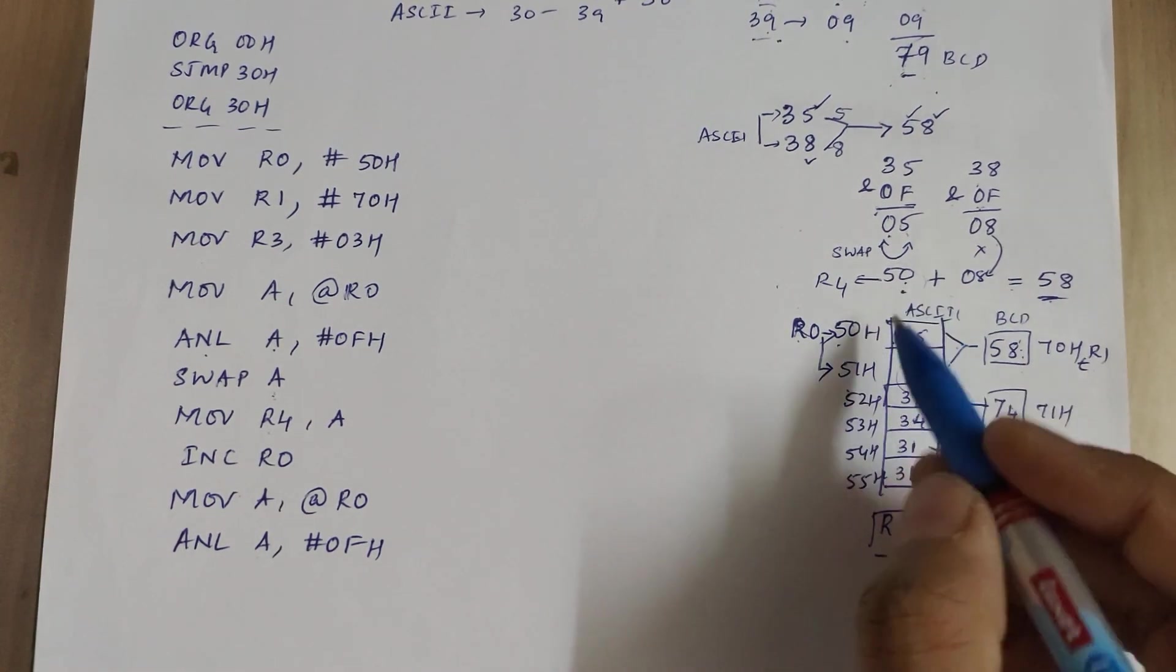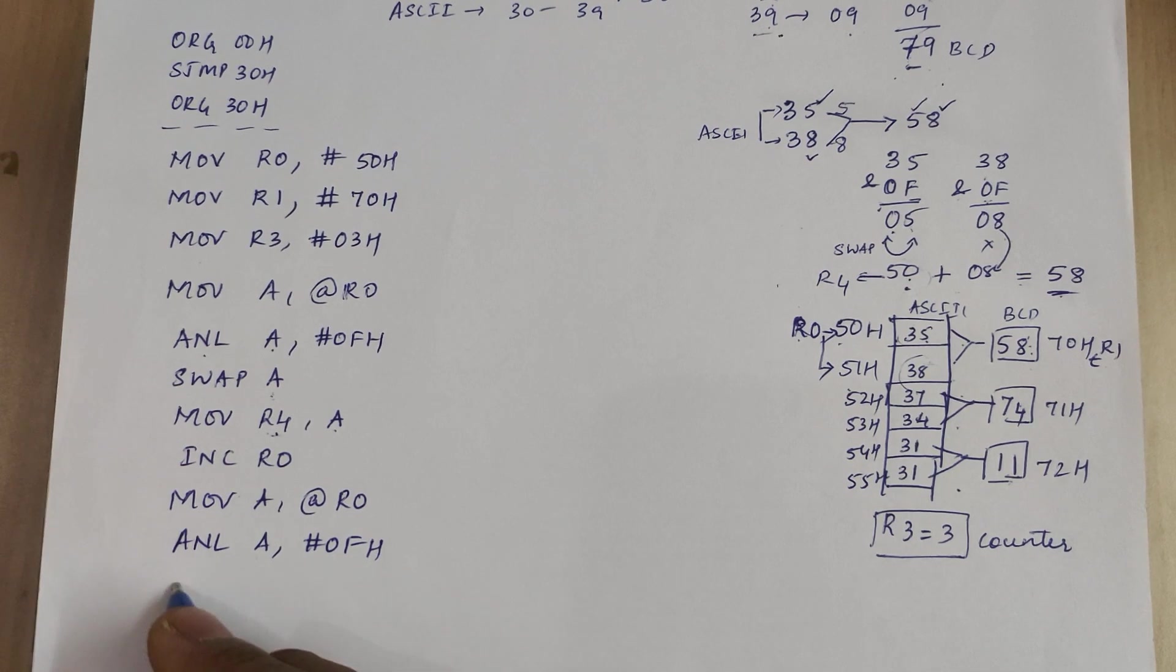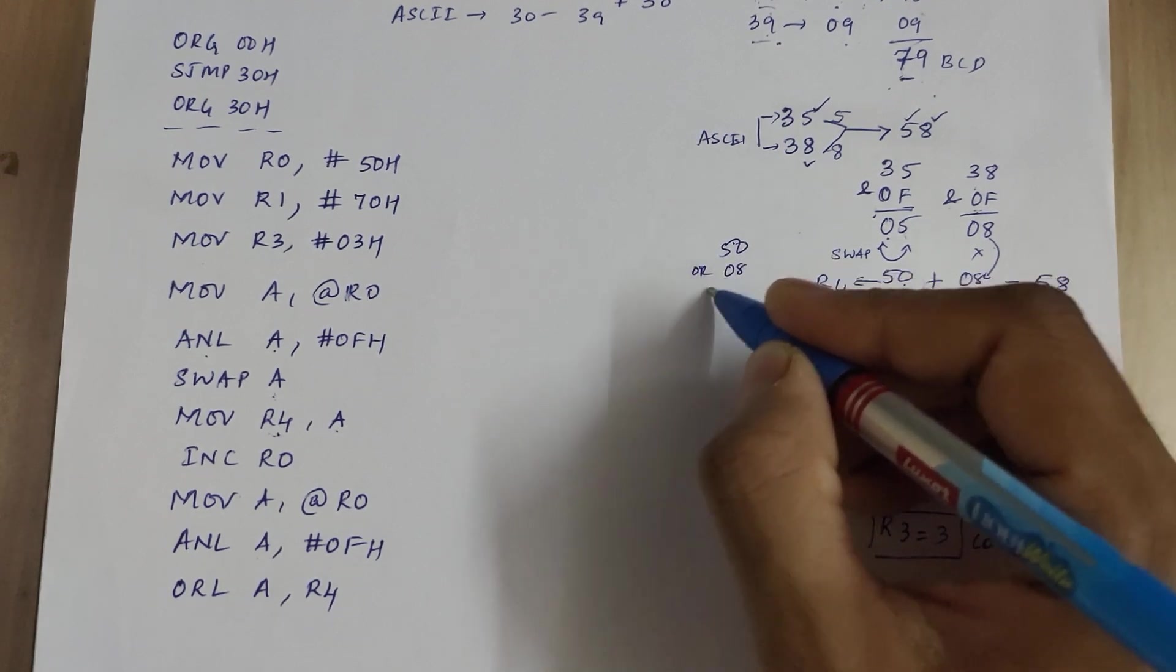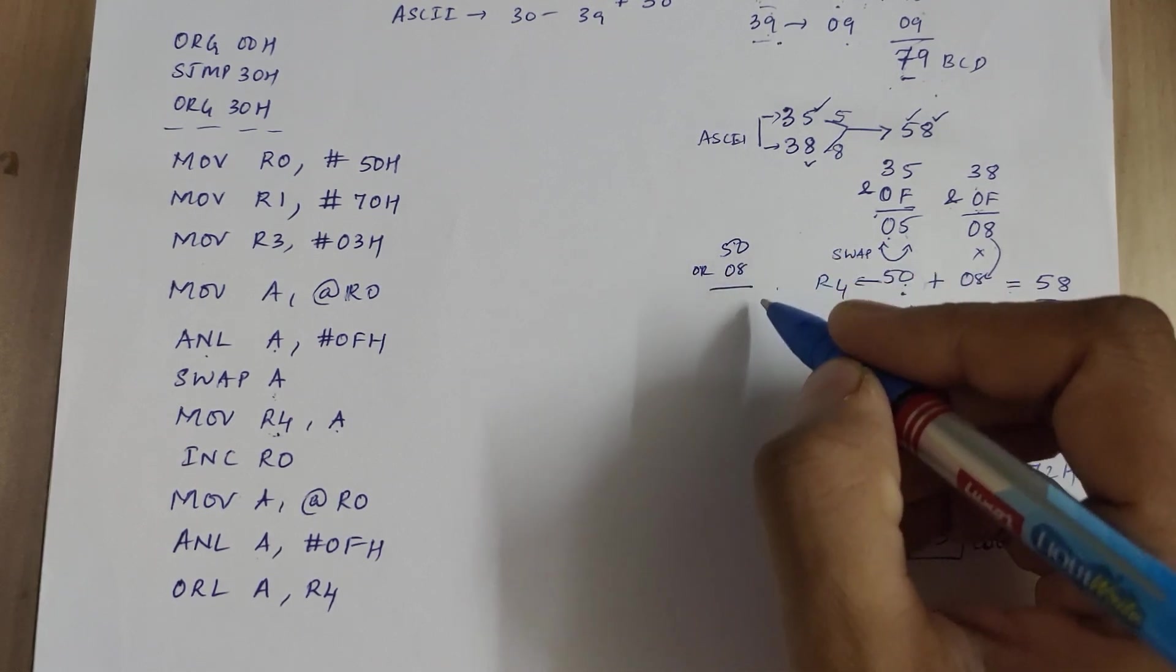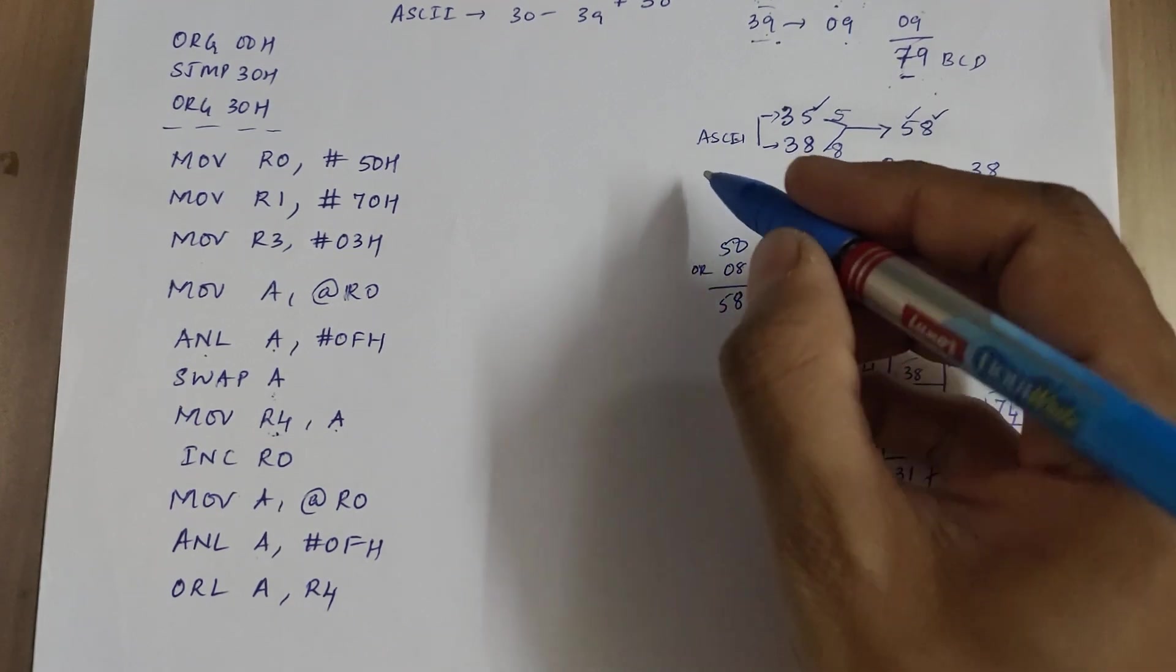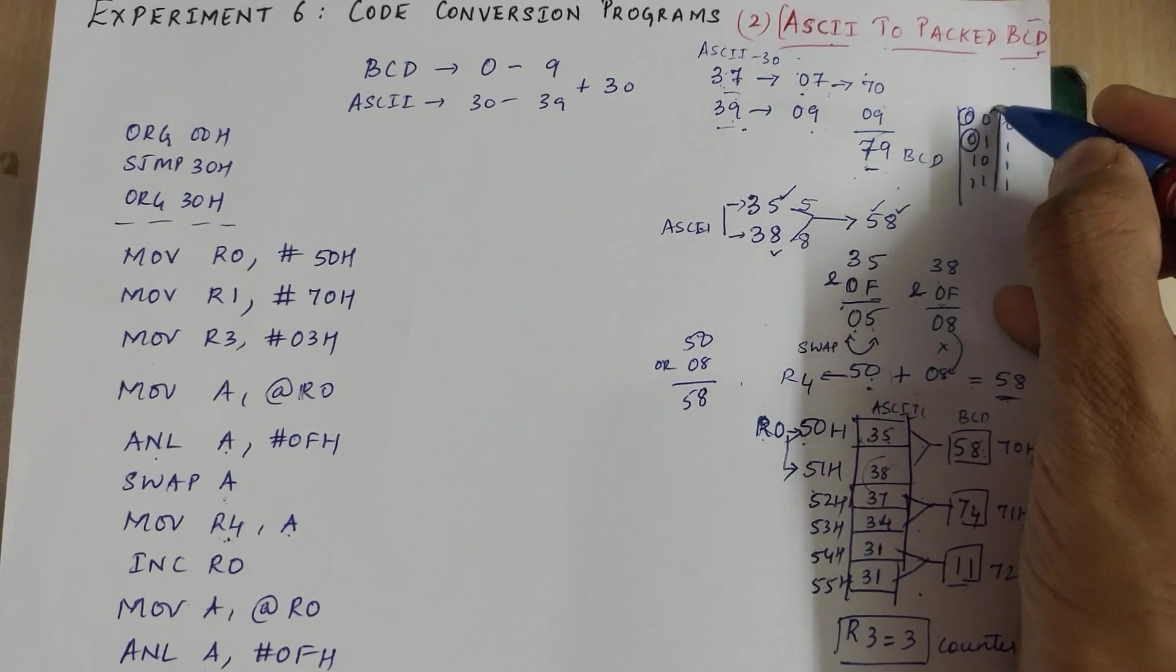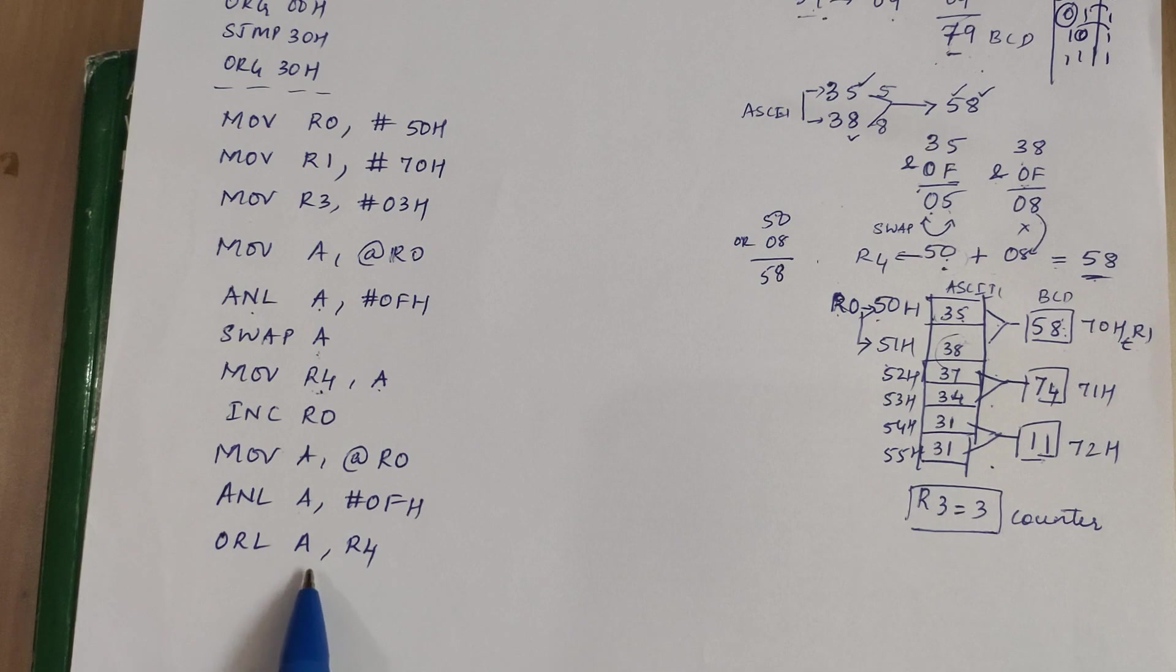So 8 is available in accumulator. Now to this 8 we are supposed to add 50. We can write add A comma R4 or we can do ORL A comma R4. How can we do OR operation? 50 ORed with 08. We know that in OR operation, whenever you OR any number with 0 you get back the same number. We can check that using the truth table of OR gate. Whenever any of the input is 0, the output is the other input as it is. So instead of add we can write ORL also.